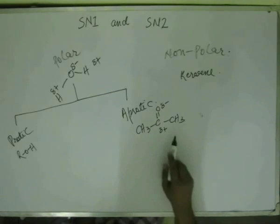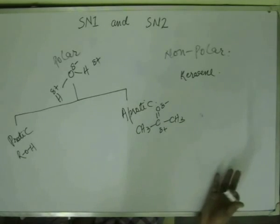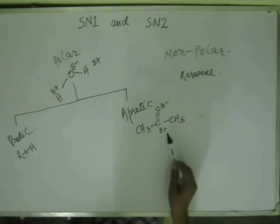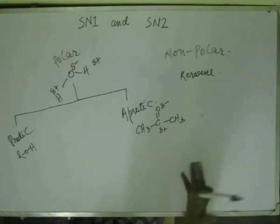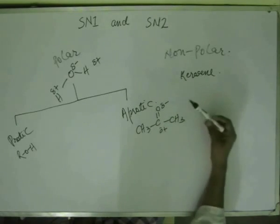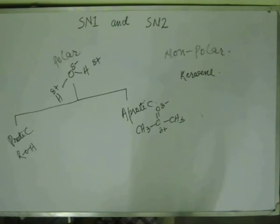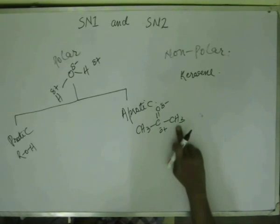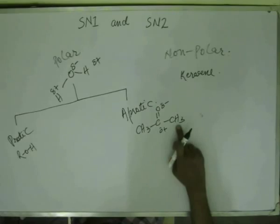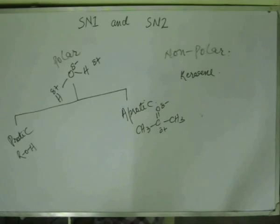Acetone is polar because of the C=O bond, where carbon has δ+ and oxygen has δ–, creating poles of charge. However, since hydrogen is attached to carbon and not to an electronegative atom, hydrogen carries no charge. So there is no H-δ+ in acetone, making it a polar aprotic solvent.